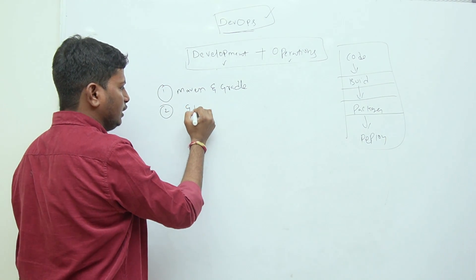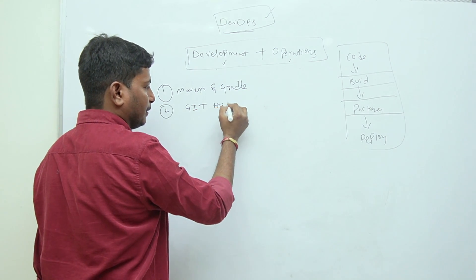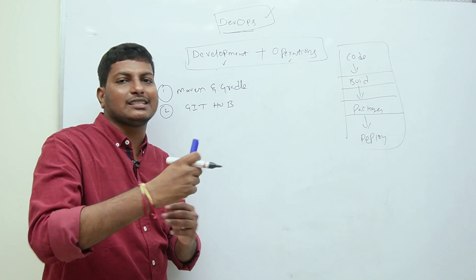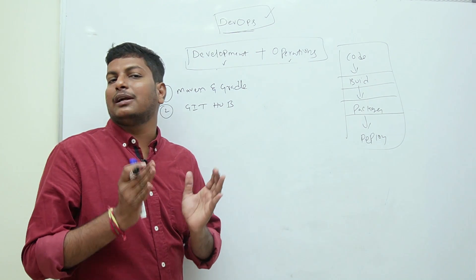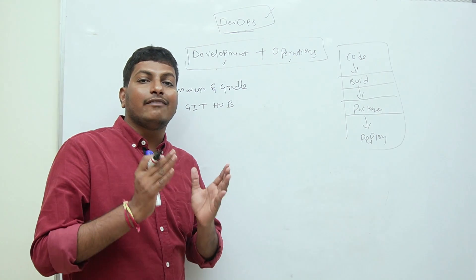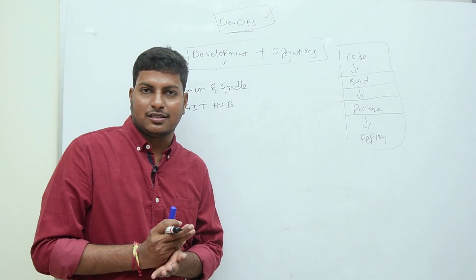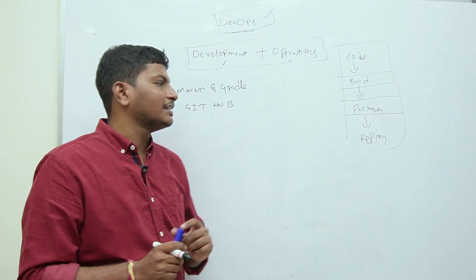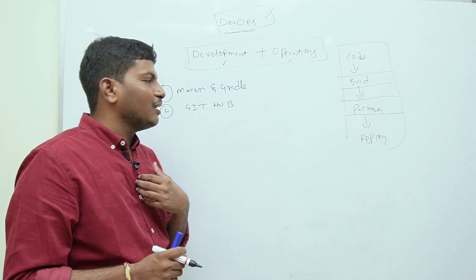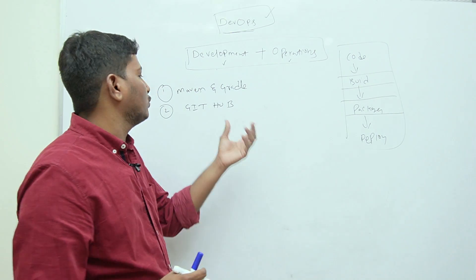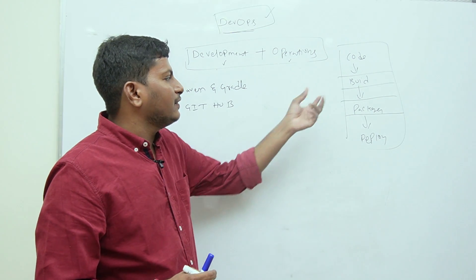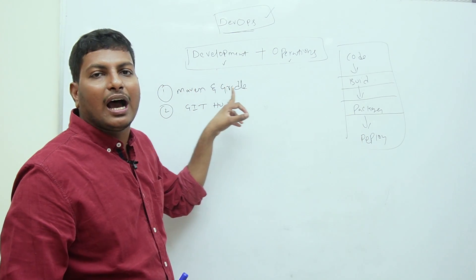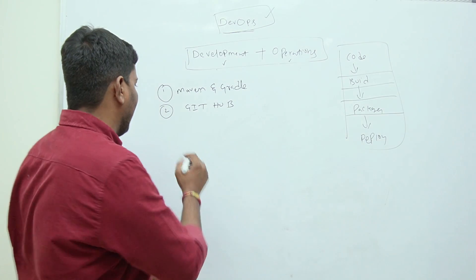Next, we need to learn GitHub. GitHub is called a Source Code Repository Server. In a project, multiple developers work from different locations and all their source code is integrated at one place — that is GitHub. As a DevOps engineer, we need to take the project source code from GitHub repository, then build and package that code using Maven or Gradle.